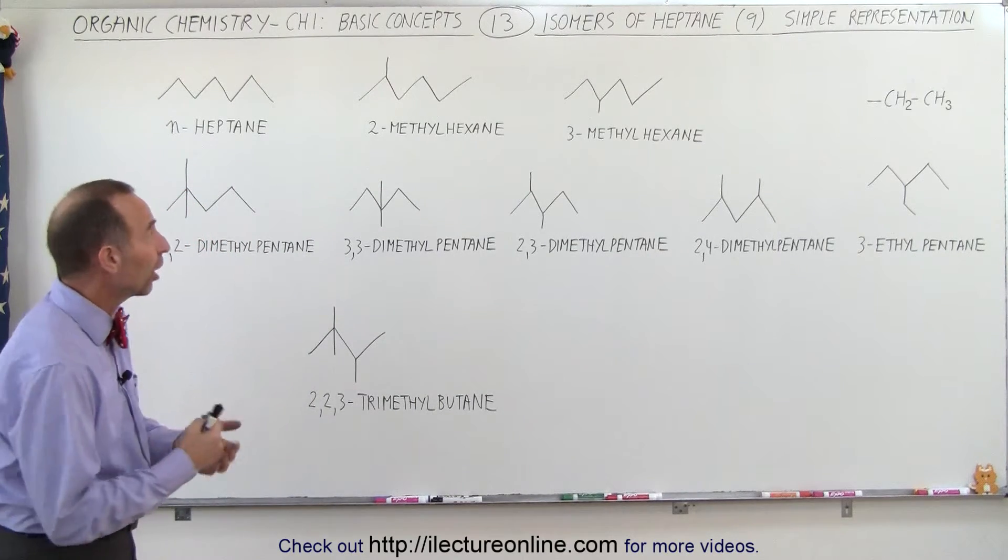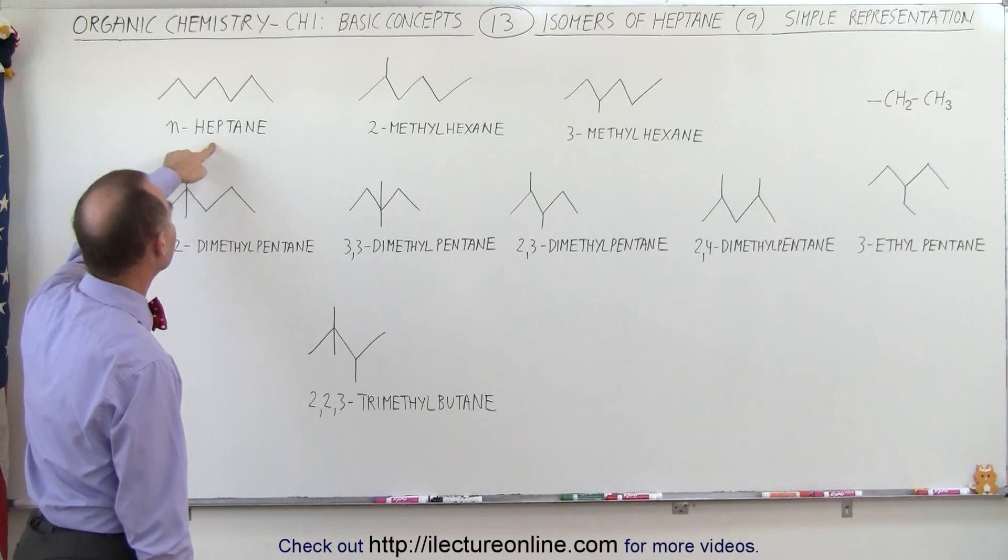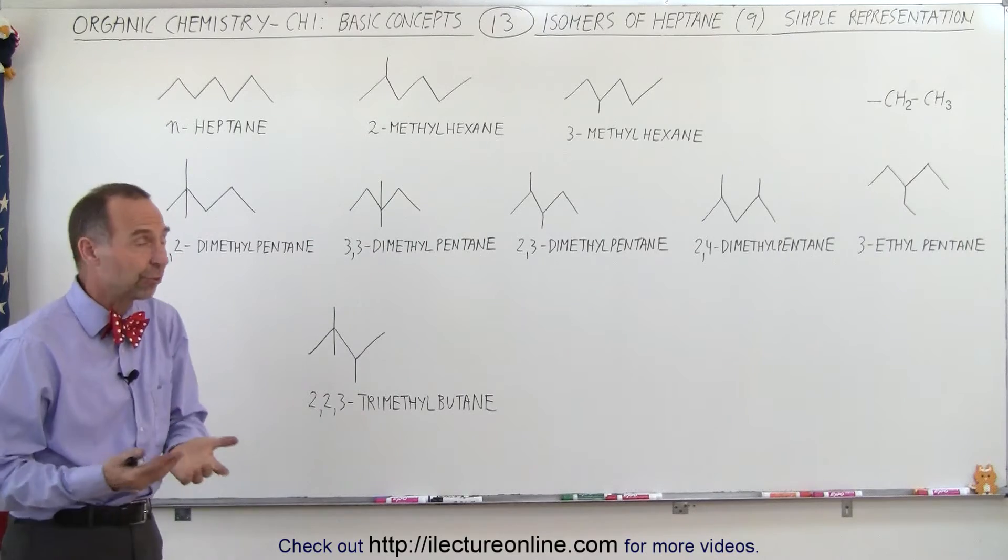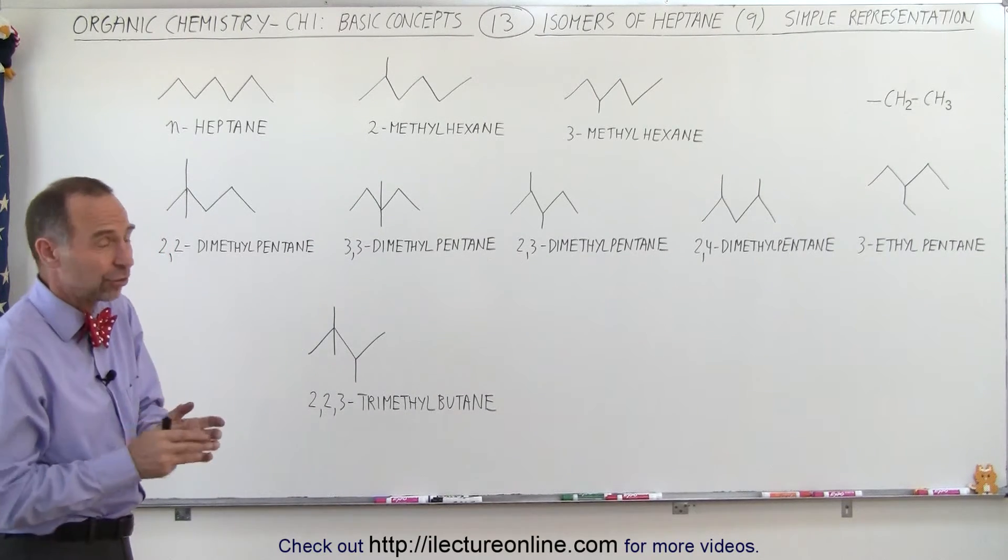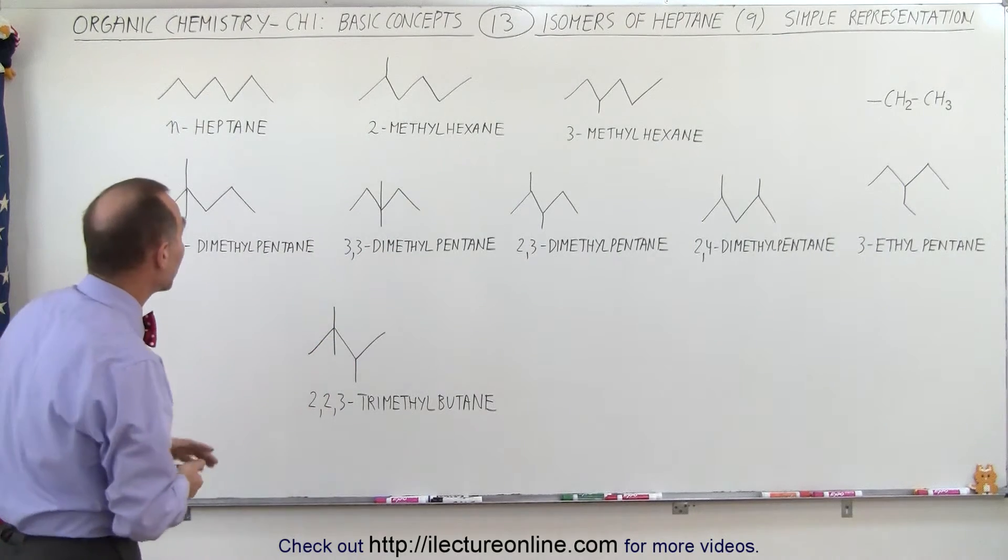Heptane means we now have seven carbons in the chain, so the linear form of heptane looks just like that using the simple representation or simple format of displaying the various isomers. It now becomes a lot easier to do it like this. It would take a lot more time and a lot more space to do it the other way.